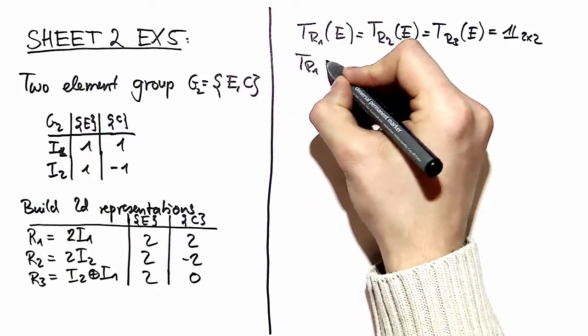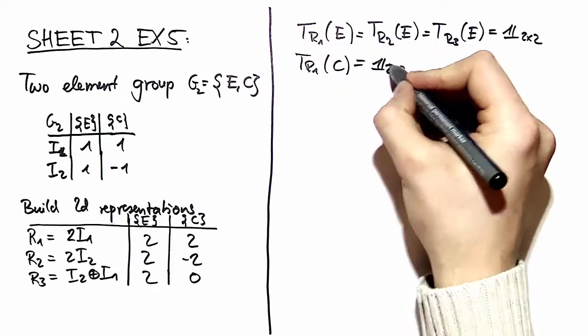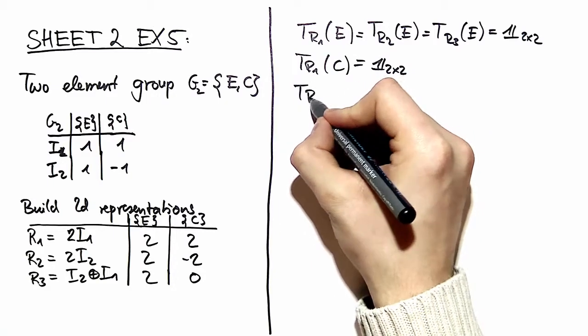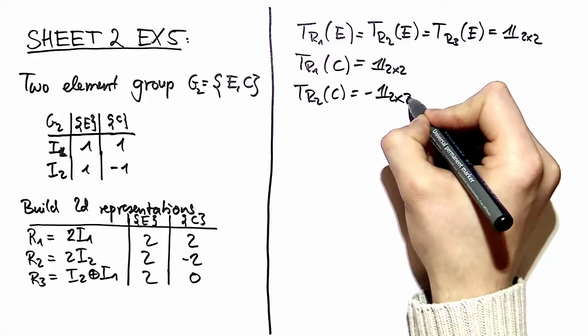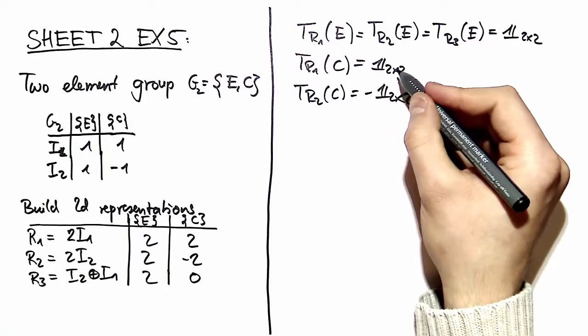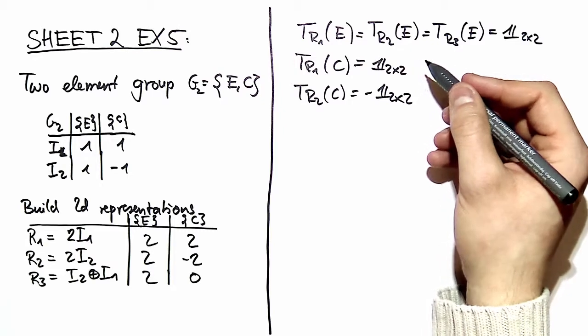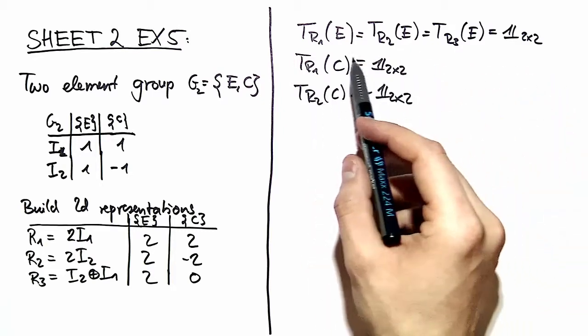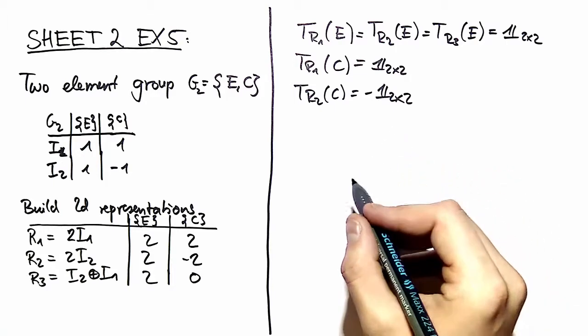For R1, the element C is just the identity element times 2, and for R2 we have minus the identity matrix. When you look at the similarity transformation properties, you can deduce that. Now we've got that interesting part.